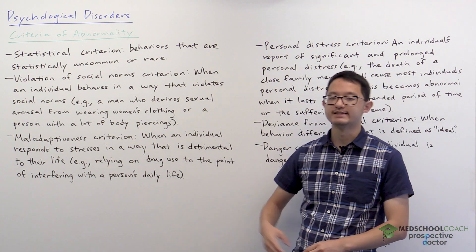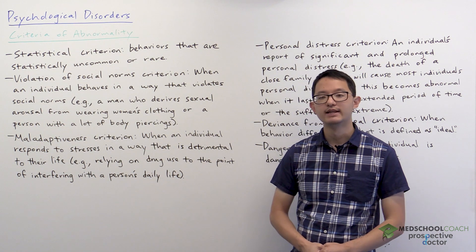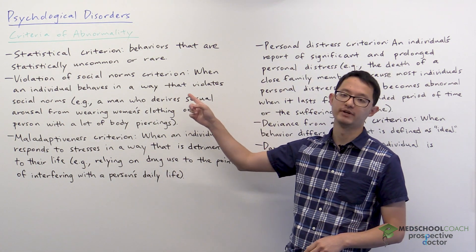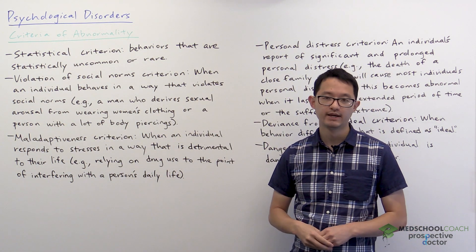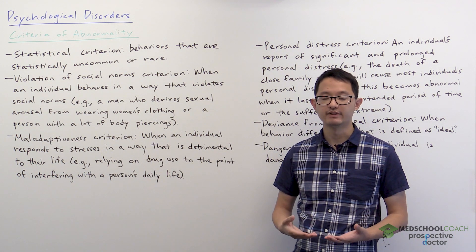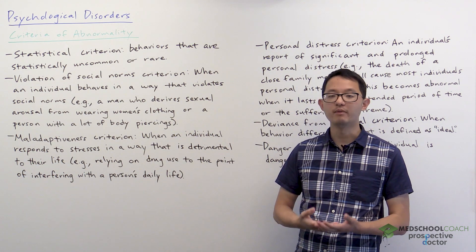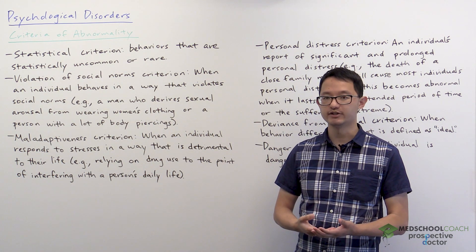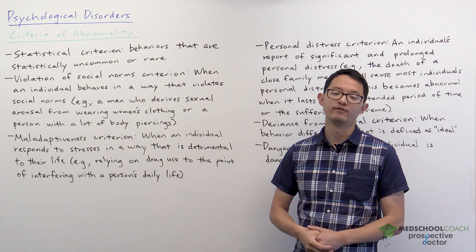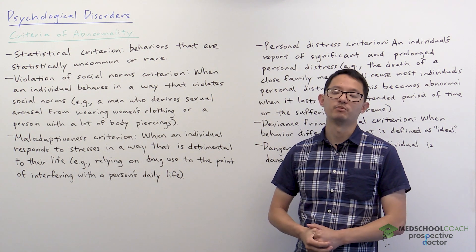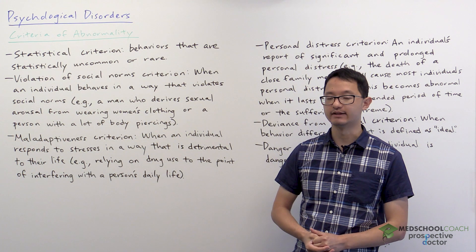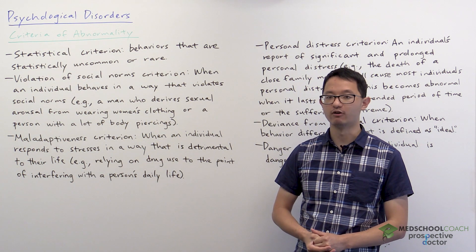The first is the statistical criterion. This refers to behaviors that are statistically uncommon or rare. If a person is exhibiting a behavior that is very common within the population, that would be considered normal. Therefore, abnormal behaviors have to be those that are statistically uncommon or rare.